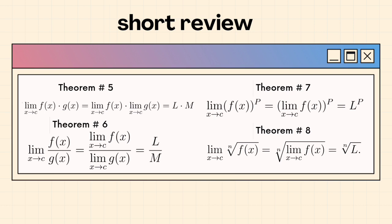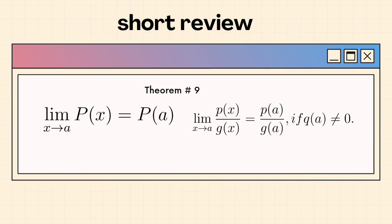Theorem number 7 is where we would first find the limit of the function inside the parentheses before we proceed with the exponent. Theorem number 8 is also the same as theorem number 7 but for radical signs. And lastly, for theorem number 9, all we need to do is substitute the value of a for the variable x.